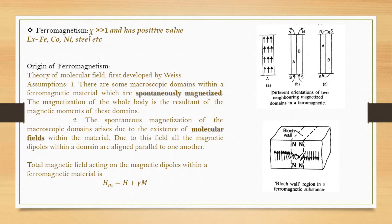In a single domain, the magnetic dipoles are aligned parallel to one another. It may happen that the neighboring domain is not parallel with the previous domain. But within a single domain, the alignment of the magnetic dipoles is parallel to one another. You can see the different orientations of two neighboring magnetized domains in a ferromagnetic material in the picture.